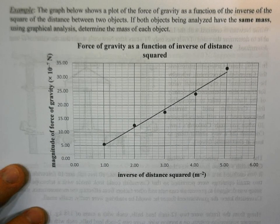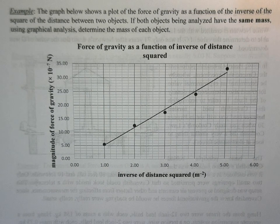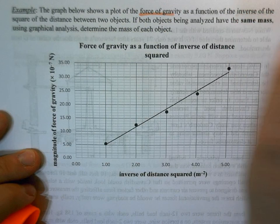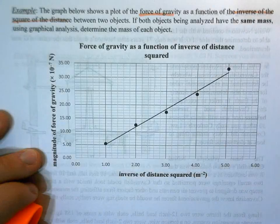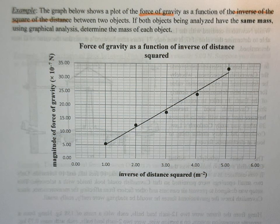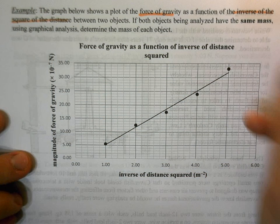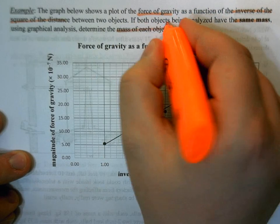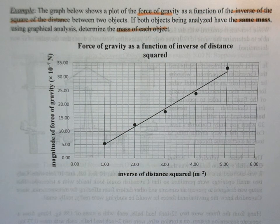So let's look at what's being asked in this question. So we've got this graph, it's going to show the force of gravity as a function of inverse of square of the distance between two objects. So both of these objects being analyzed, they have the same mass. So using graphical analysis, we'd like to determine the mass of each object.